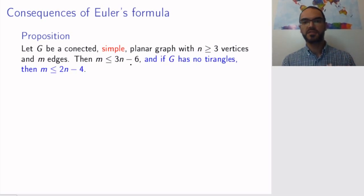You can say more if you know that your graph has no triangles. So a triangle is a subgraph that is isomorphic to the three cycle. If the graph has no triangles then the number of edges is at most twice the number of vertices minus four.